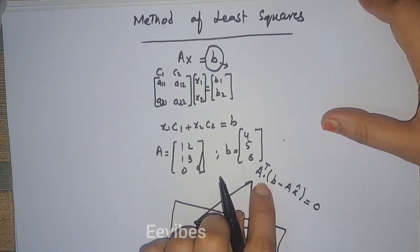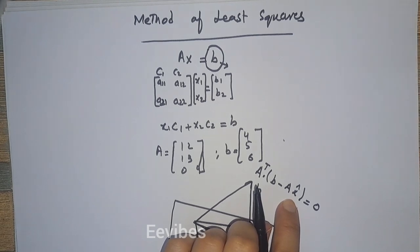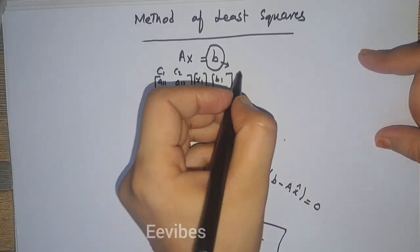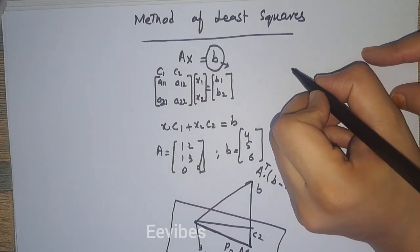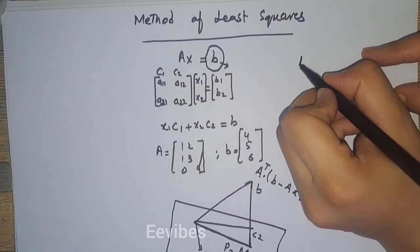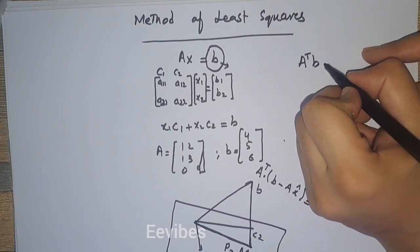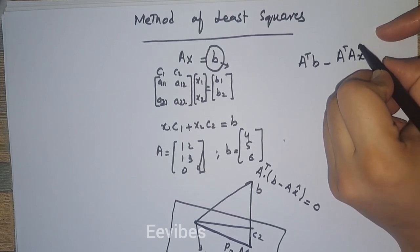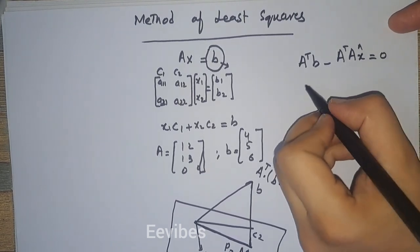So this equation will be used for finding the method of least squares. And according to which, if you simplify this expression, you can see that it becomes A^T B minus A^T A into X̂ is equal to 0.